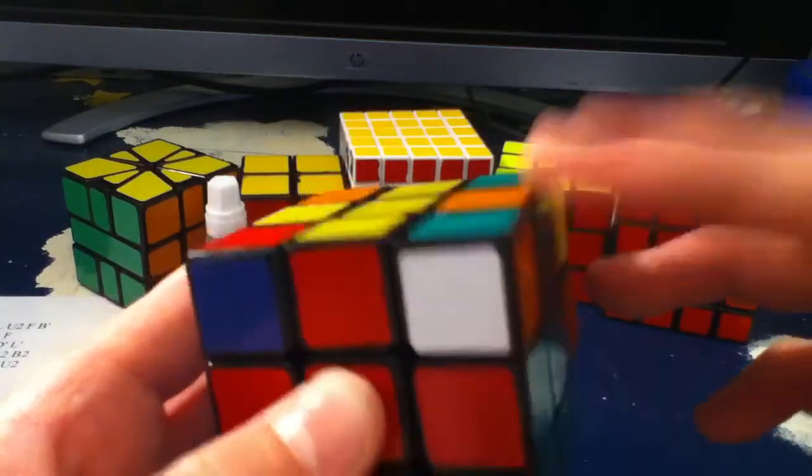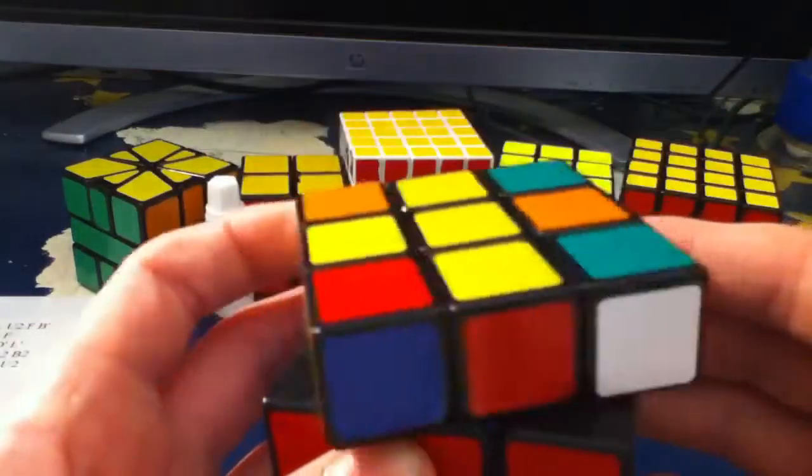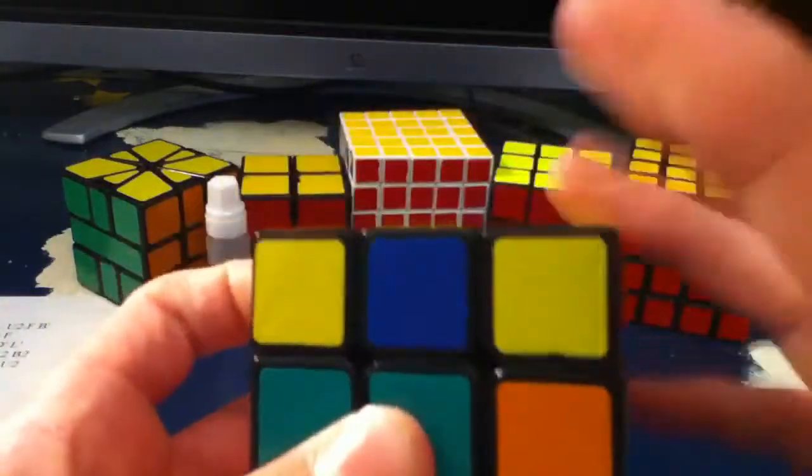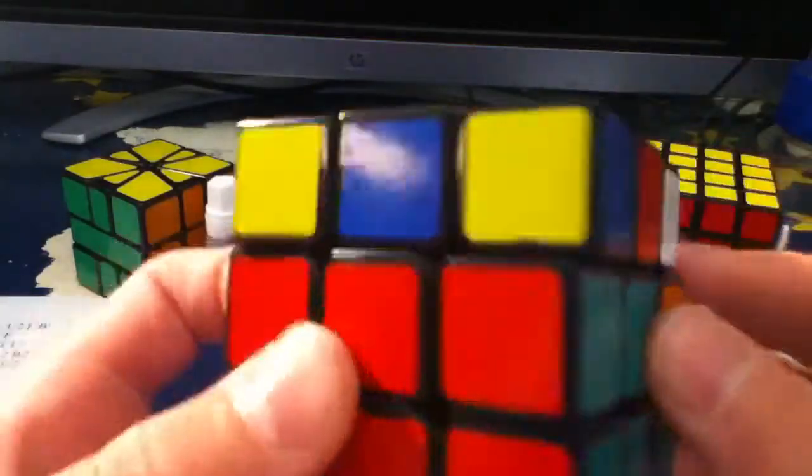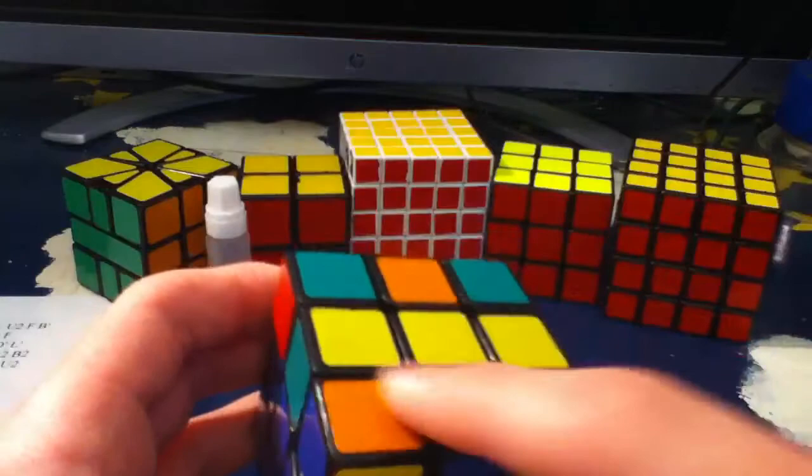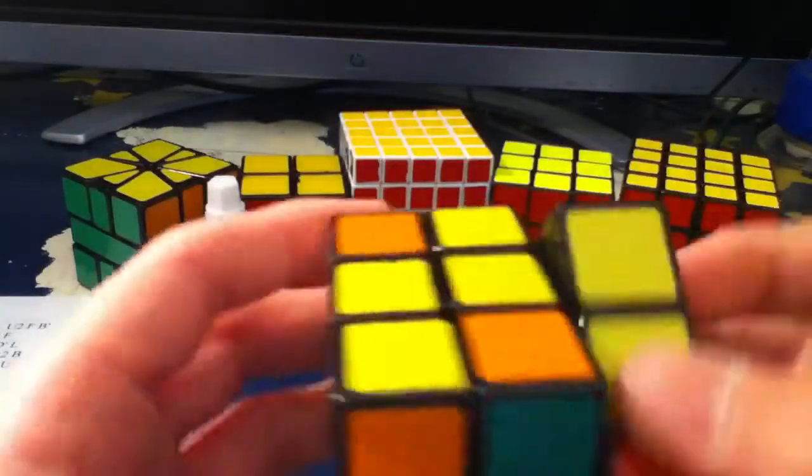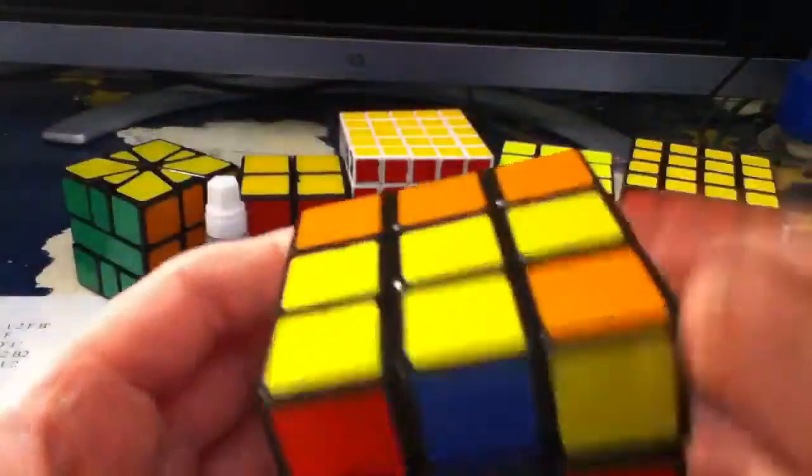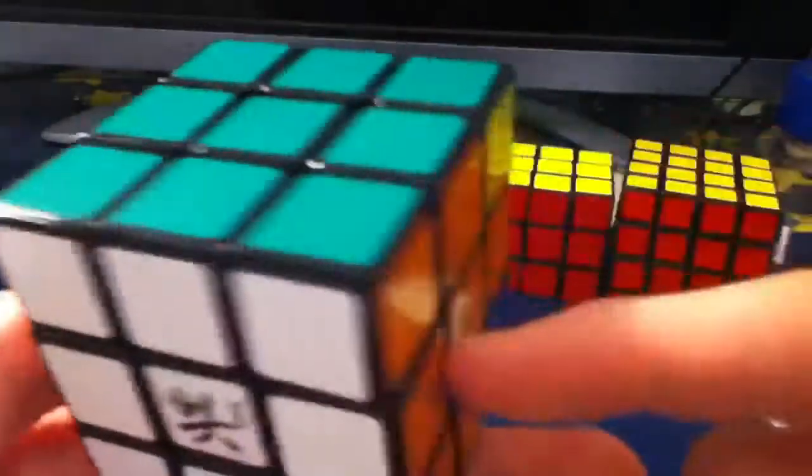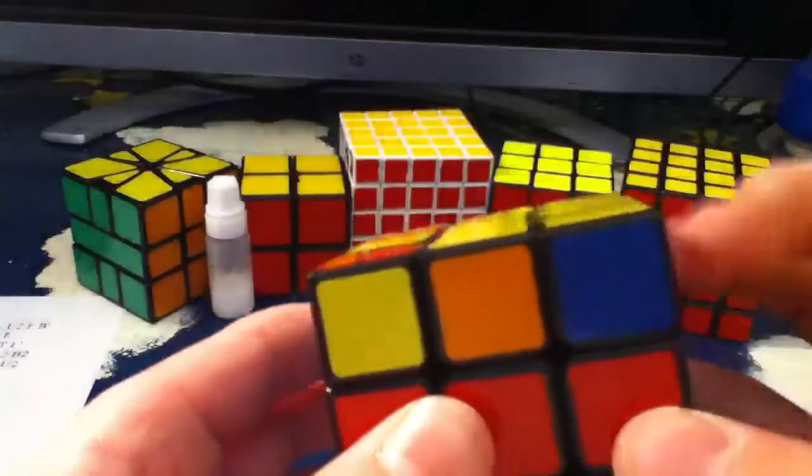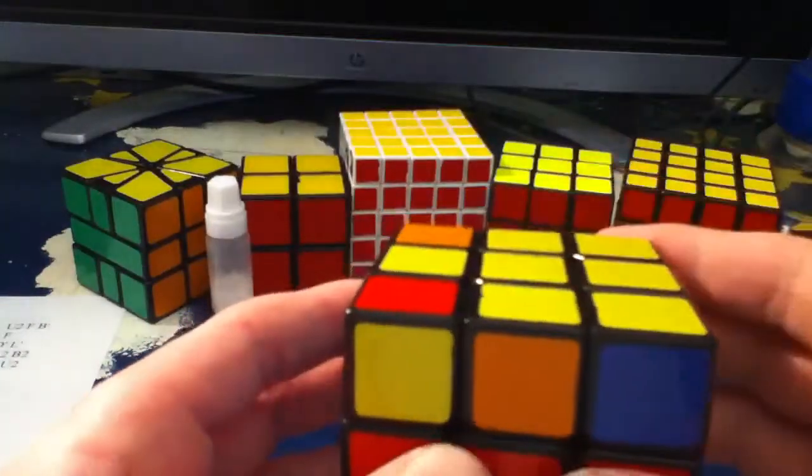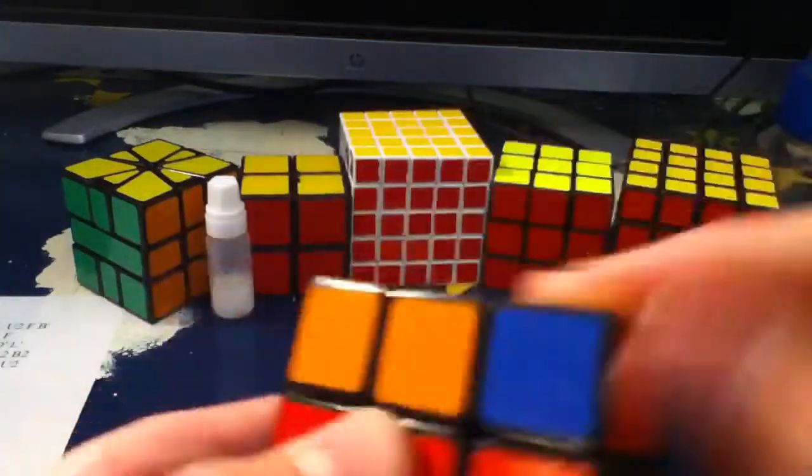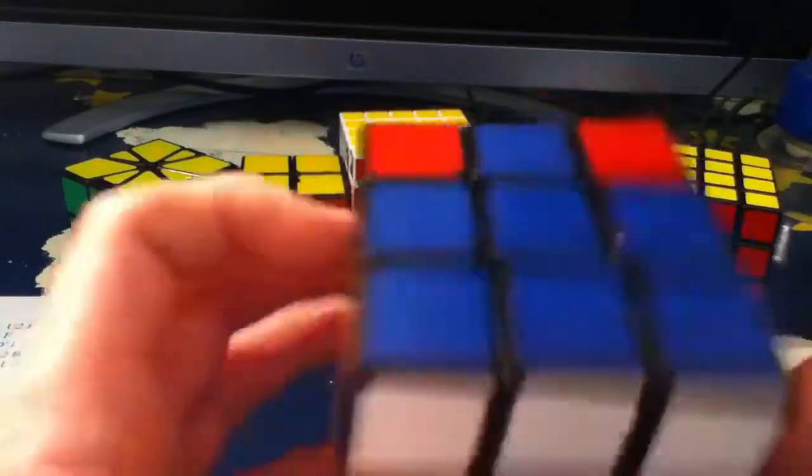Now I have these two. And normally I'll rotate and do it like this, but since I have three cross edges oriented, I'll use the edge control algorithm, well not really an algorithm but just keeping the edges oriented, and then insert it.